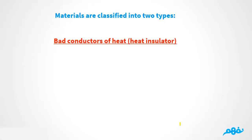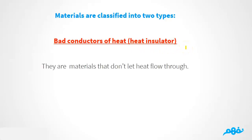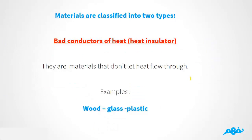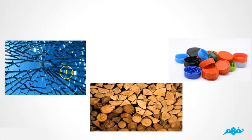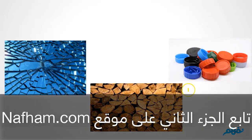The second type of material is bad conductors of heat, also called heat insulators. Heat insulators are materials that don't let heat flow through them. Examples include wood, glass, and plastic. As you can see here, we have glass, wood, and plastic — these materials are heat insulators.